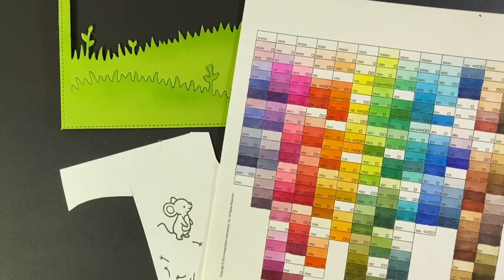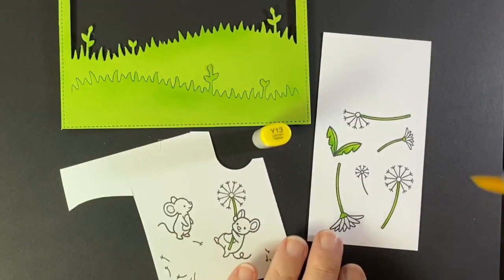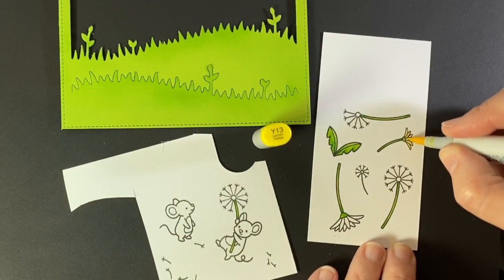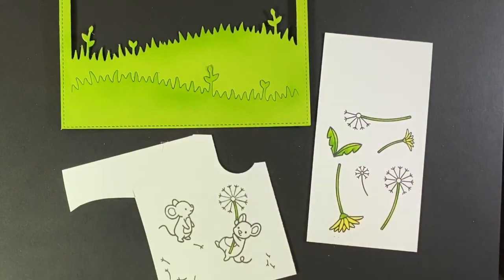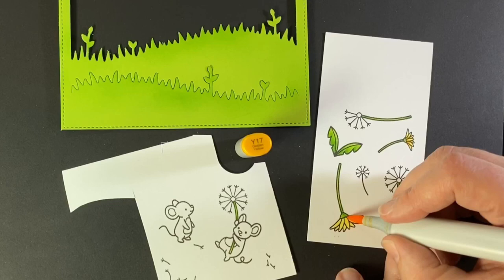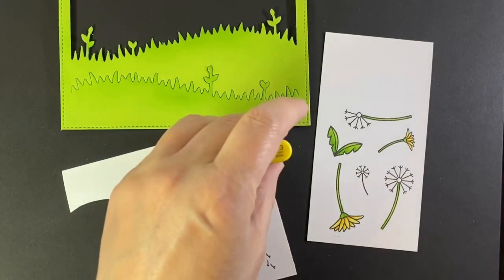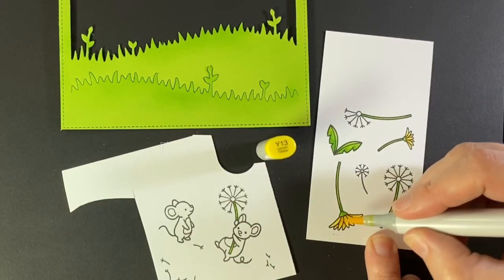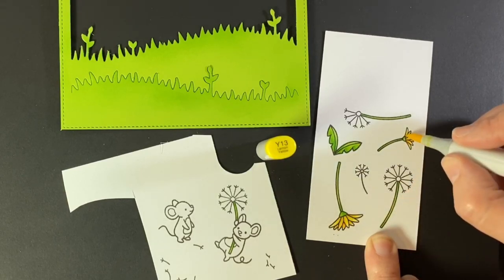So what's a good dandelion color? I decided on Y13 and Y17 and I didn't use the Y15 because these are small areas and I wanted a big contrast so just skipped one of the colors. I'll blend the Y17 in with the Y13 and I'm not worrying if it's not really well blended.